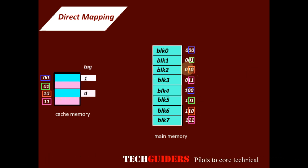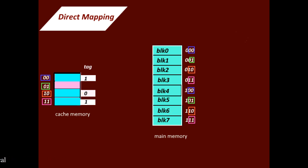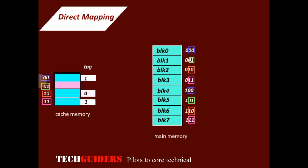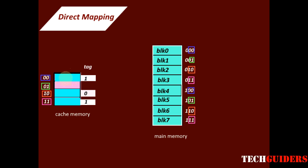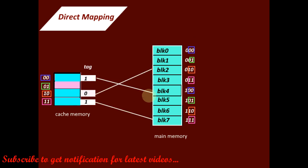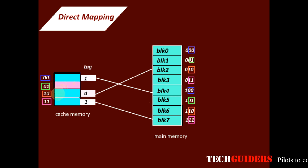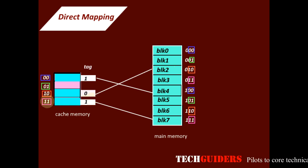The remaining bit is attached as a tag to that cache line. Similarly, block seven's least significant bits are one-one, so it is copied to that cache line and its remaining tag bit is one. Analyzing the tags: cache line zero-zero with tag one means the main memory block is one-zero-zero, which is block four. Cache line one-zero with tag zero means block zero-one-zero, which is block two. Cache line one-one with tag one means block one-one-one, which is block seven.